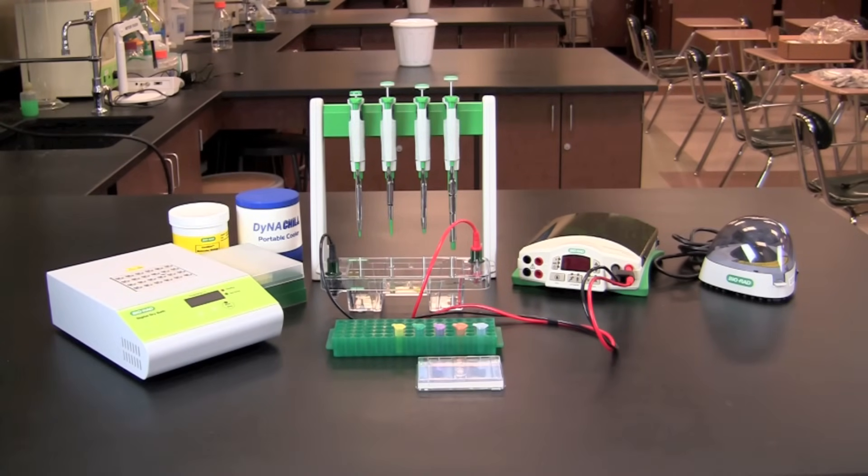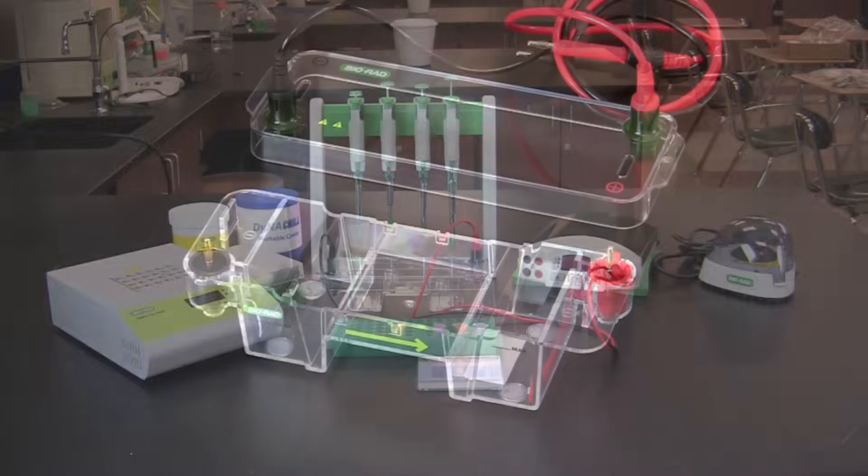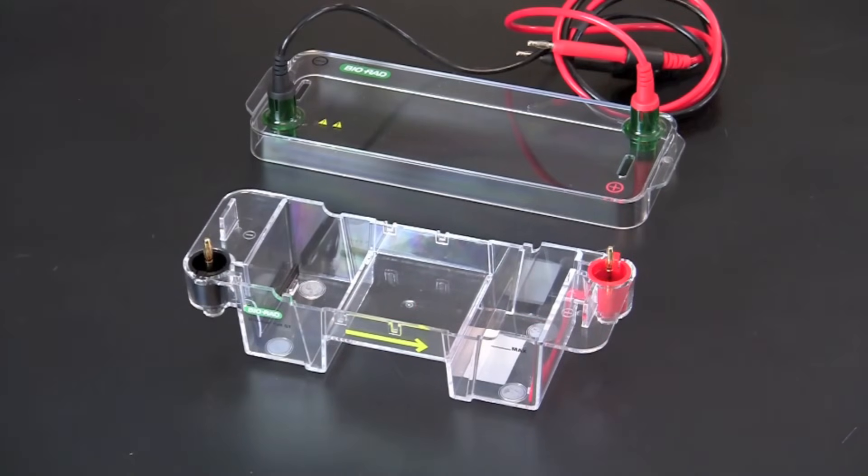This video will take you through the process for loading and running DNA samples on an agarose gel. You will be using a mini subcell to perform agarose gel electrophoresis. The subcell has an electrode wire running across the bottom of each end. This provides for an electric current to pass which separates the DNA fragments in the samples.